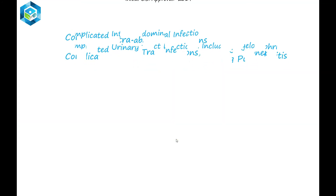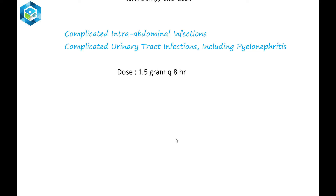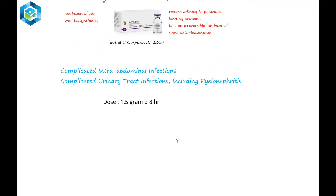Indications of Zerbaxa: it is used in the treatment of complicated intra-abdominal infections with metronidazole, and Zerbaxa can also be used for urinary tract infections including pyelonephritis. The dose of Zerbaxa is 1.5 grams every 8 hours. Thank you for watching.